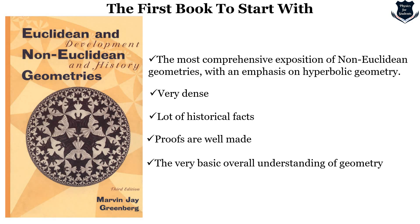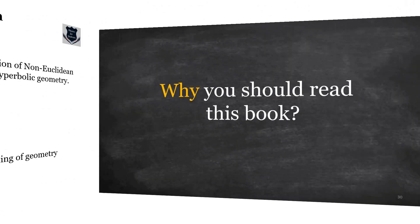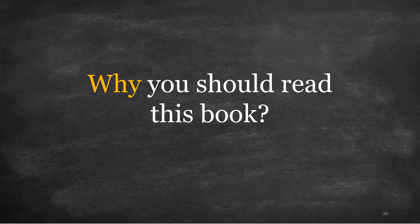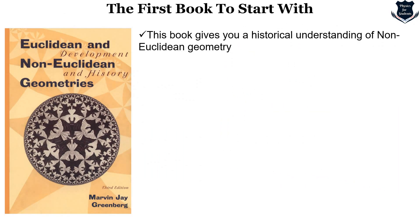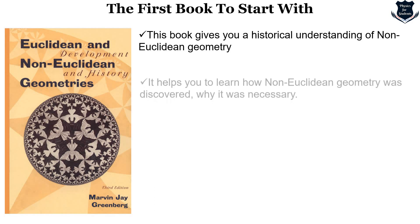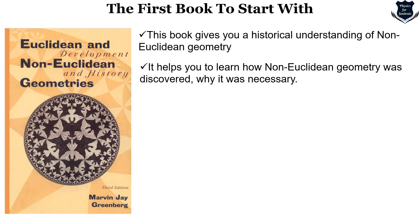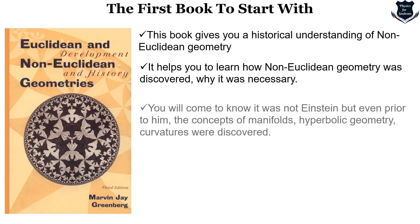To summarize, this is the most comprehensive exposition of Non-Euclidean geometry, with an emphasis on hyperbolic geometry. It is very dense, carries a lot of historical facts, proofs are well made, and it gives a very basic but great understanding of geometry — from Euclidean moving up to Non-Euclidean. Why this book out of all the others available? This book gives you a historical understanding of Non-Euclidean geometry. Be it geometry, real analysis, relativity, or quantum physics, you need to understand why. This 'why' comes from an understanding of the historical development of thought; otherwise it will be just boring mathematics.